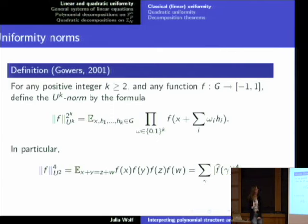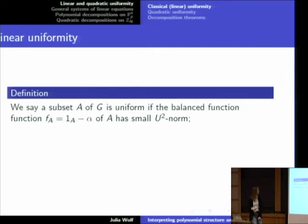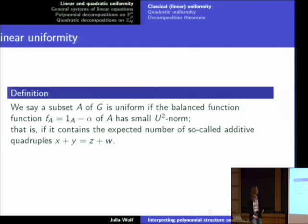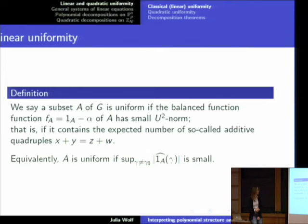This last expression should be familiar to anyone doing linearity testing. So a subset A of this abelian group is uniform if the balanced function F sub A has small U2 norm. The balanced function is just the indicator function of the set shifted by alpha so that it averages to zero. Really what we're saying is that A is uniform if it contains the expected number of additive quadruples. By the Fourier transform expression, that's equivalent to saying that the largest non-trivial Fourier coefficient is small.